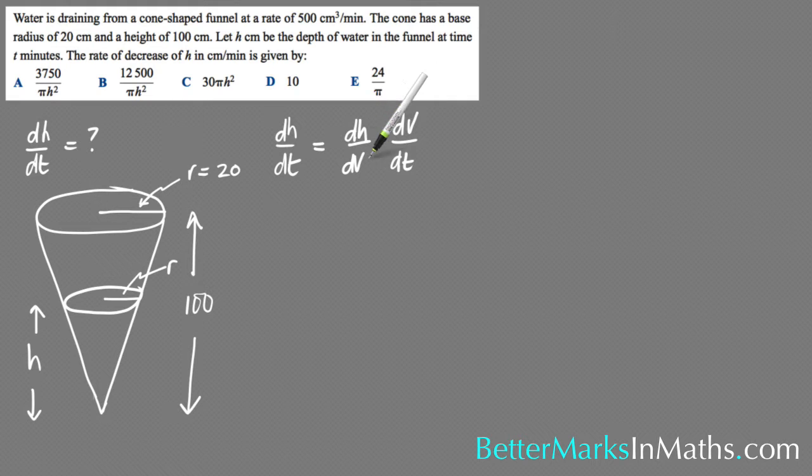So what you need to do next to get dV/dh is to get the volume of the cone. So the volume is equal to πr²h/3, and you can see that there's two variables here, so you need to get r in terms of h because you want dV/dh.